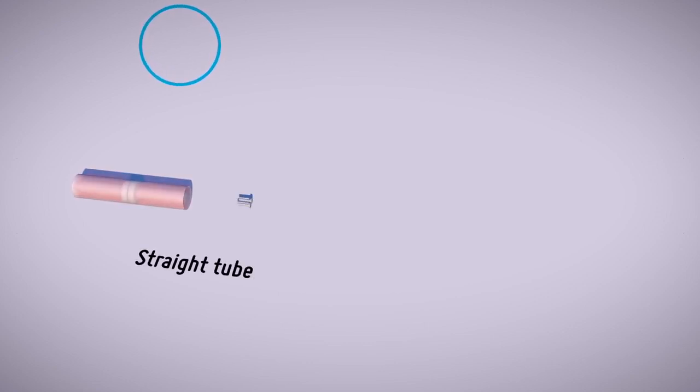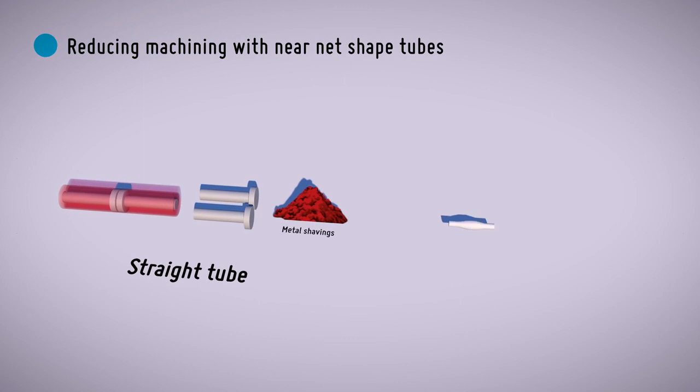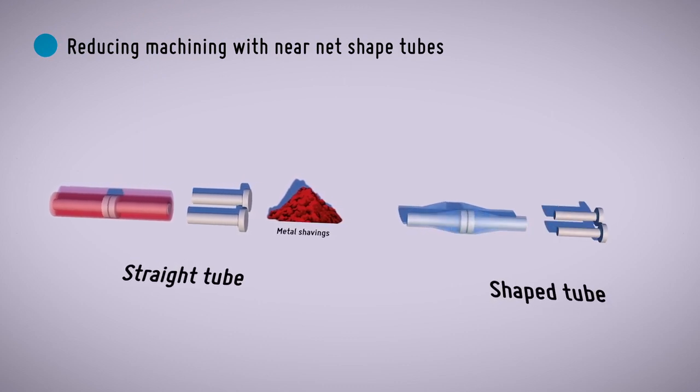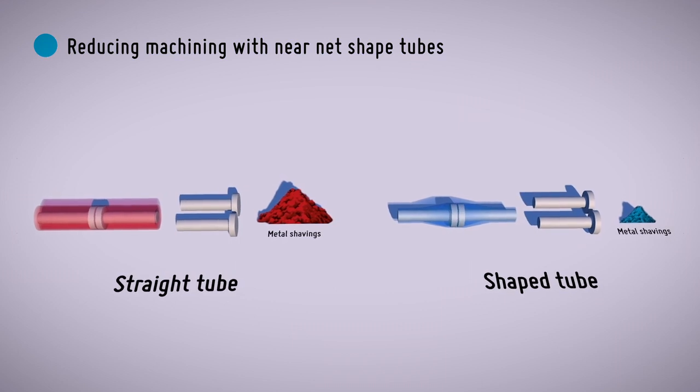Near net-shaped tubes save material and machining time thanks to tight dimensional tolerances and the ability to produce every needed millimeter of outside diameters and wall thicknesses.